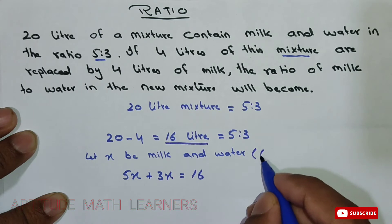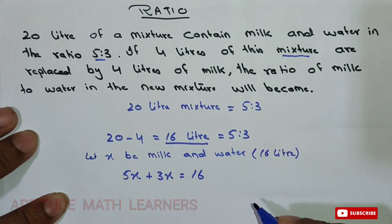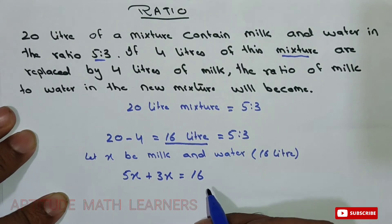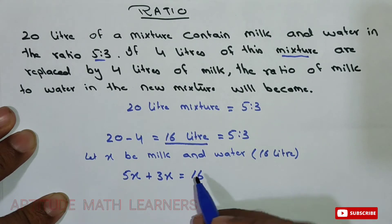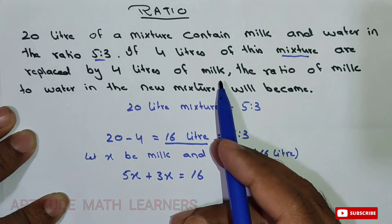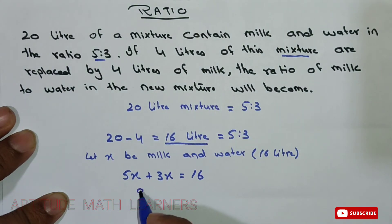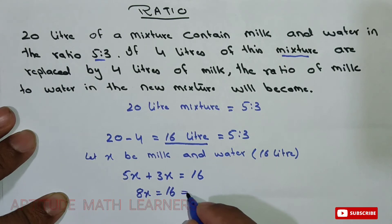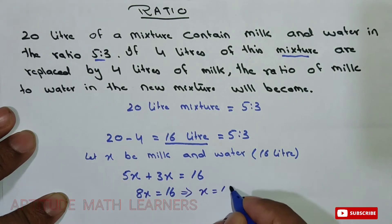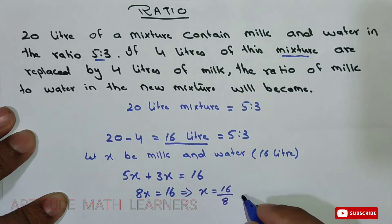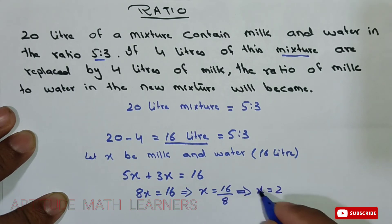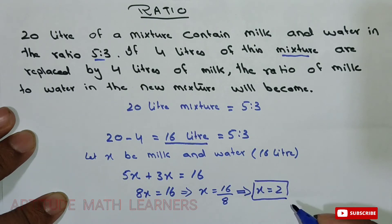We are calculating only for 16 litres, not for 20 litres. So 8x equals 16. Solving further, x equals 16 divided by 8, which gives x equals 2.